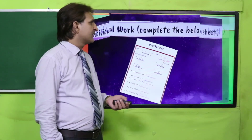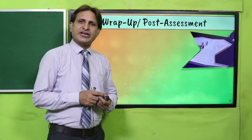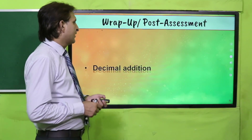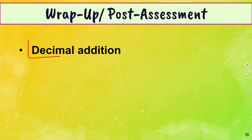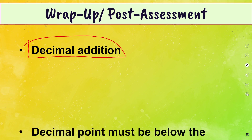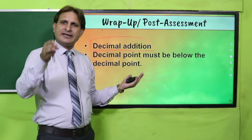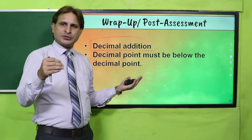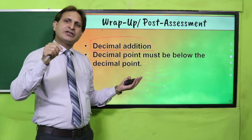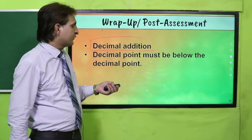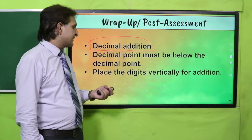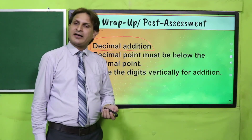Students, wrap up ki taraf chalte hain. Aaj ke lesson mein aapne kya cheez dekhi? Humne decimal addition ko dekha — ke kaise given decimals ko add kiya jaata hai. Decimal point must be below the decimal point when you are adding decimal digits. Same column wale digits ko add karein, aur decimal point ke neeche decimal point result mein write karna hota hai. So, place the digits vertically for addition.